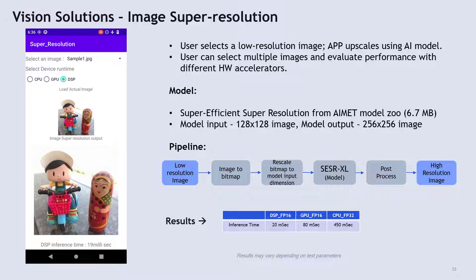The second vision solution is image super resolution. This solution demonstrates how users can upscale an image to a higher resolution image without much accuracy or quality loss. The model used is Super Efficient Super Resolution, and this model is taken from Qualcomm AMET Model Zoo. The model input is a 128x128 pixel image. The model upscales twice in both directions — width and height — and the model output is a 256x256 pixel image.